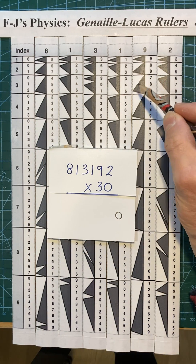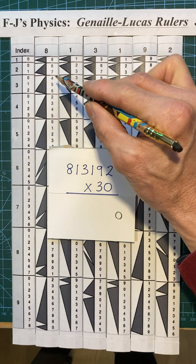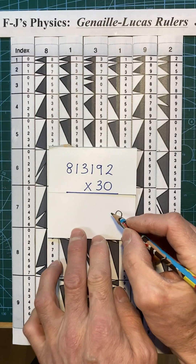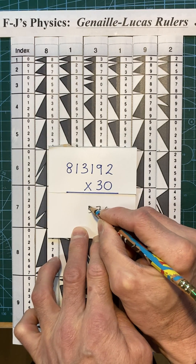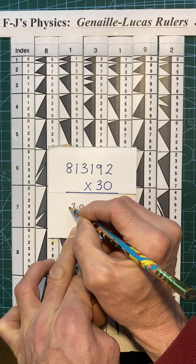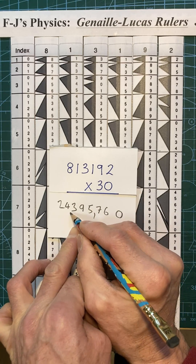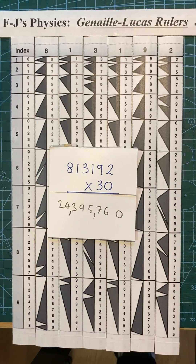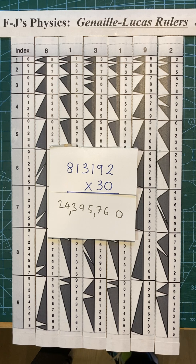So: 6, 7, 5, 9, 3, 4, 2. So the answer to 813,192 times 30 is 24,395,760.